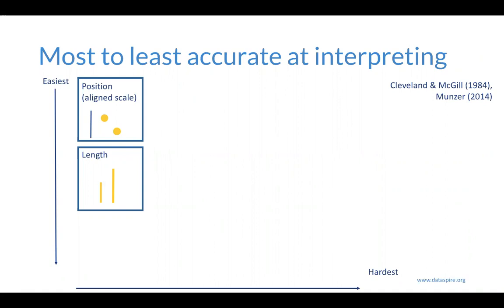Great work by Cleveland, McGill, and Munzer looked specifically at what is easiest for our brain to interpret. The answer is position in comparison to a common scale — scatter plots and bar charts, how this goes to this scale versus how they differ — and then similarly, a difference in length, whether to a common scale or otherwise. We're really good at picking out those distances and lengths.